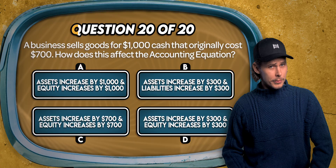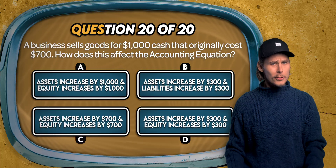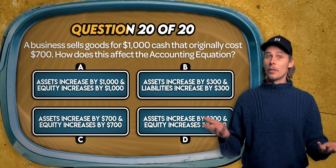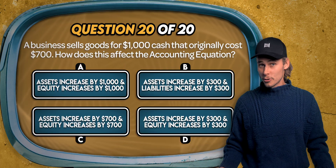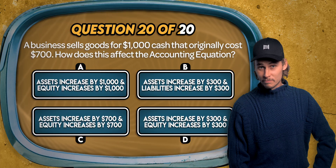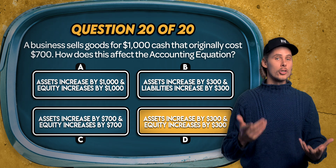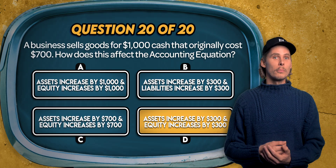Question 20. Listen carefully to this one. A business sells goods for $1,000 cash that originally cost $700. How does this affect the accounting equation? Assets increase by $1,000 and equity increases by $1,000? Assets increase by $300 and equity increases by $300? Assets increase by $700 and equity increases by $700? Or assets increase by $300 and equity increases by $300? The answer is D. The sale increases cash by $1,000 but reduces inventory by $700. The net effect is a $300 increase in assets. This $300 profit flows through retained earnings, increasing equity.